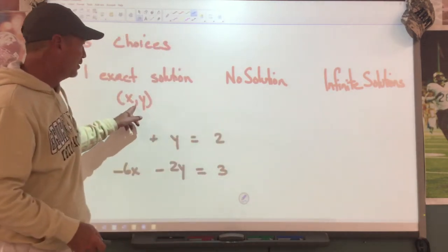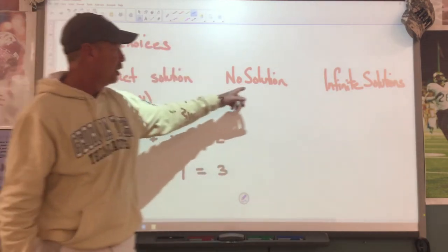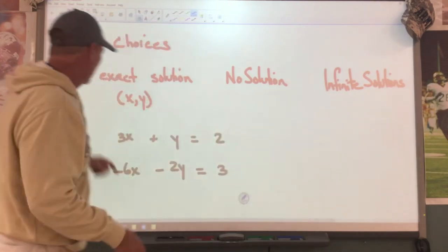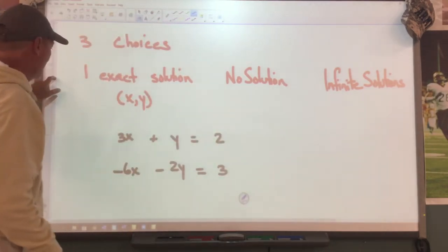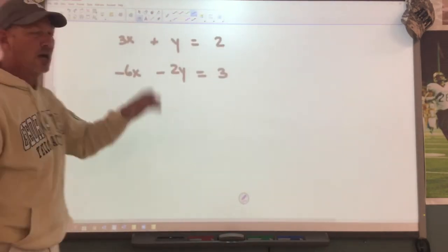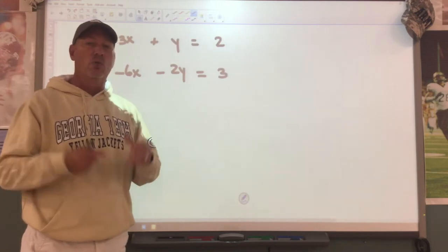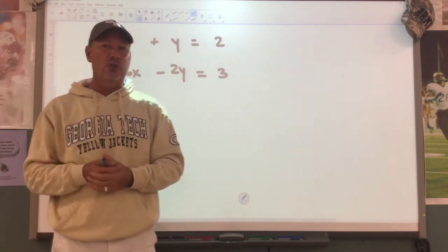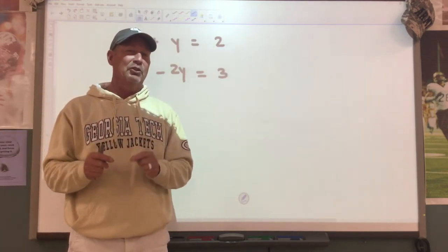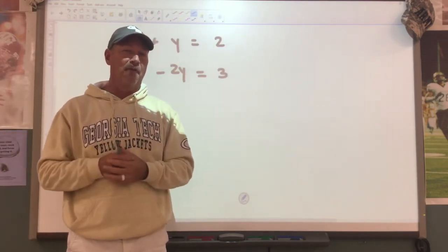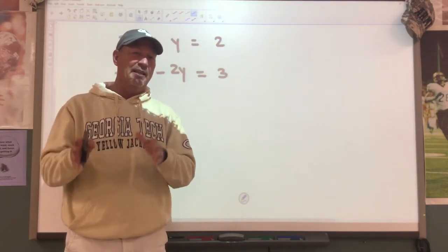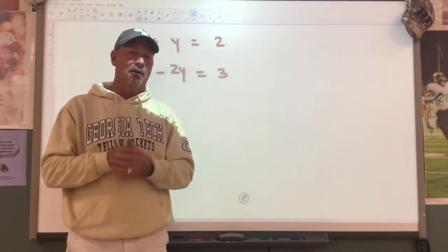One exact solution where I get an ordered pair, no solution, or infinite solutions. We've already learned how to do this by graphing and those were our three choices. So let's look at these. If I had a problem that looked like this and we're using substitution, I'm going to ask you to find a variable that would be easy to isolate or to get by itself.